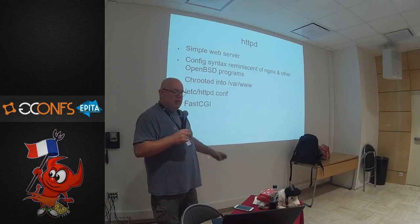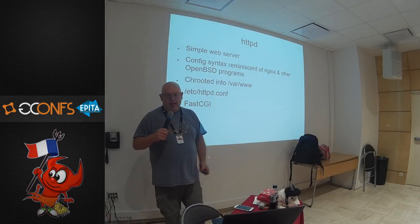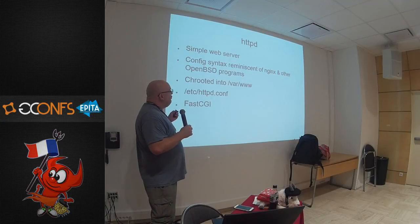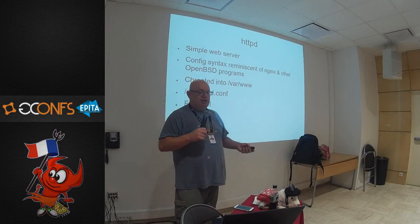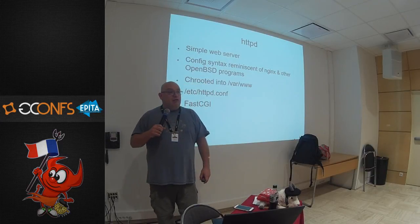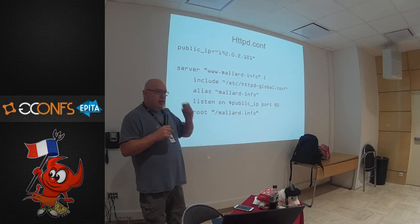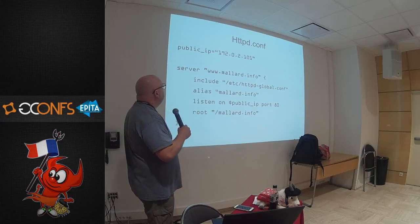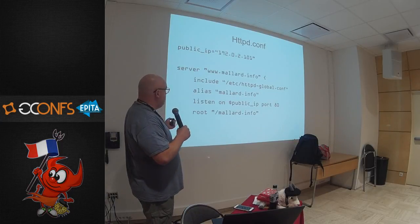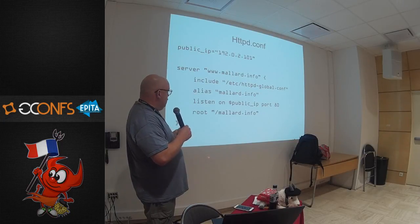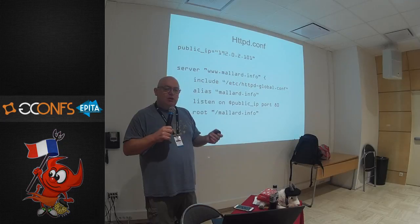HTTPD is a simple web server. The config syntax looks like Nginx — like pretty much every other OpenBSD server. It runs privilege separation, chrooted into /var/www. You configure it in /etc/httpd.conf and dynamic content comes through FastCGI integration. You set a macro, define a server — all servers are virtual servers. You can include a file, have web aliases, listen on the macro on port 80, and set a root directory inside the chroot. If you have used any OpenBSD software, this should look very familiar.